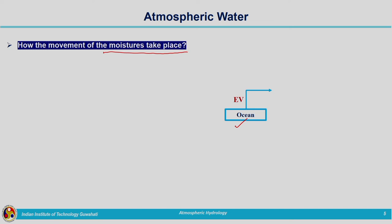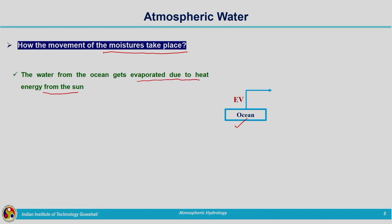Due to evaporation, water vapour is formed and moves upward into the atmosphere, getting evaporated due to heat energy from the sun. When it absorbs heat energy, warmer air near the water body — which contains water vapour — rises into the atmosphere, continuing to rise until it cools and condenses. Then clouds are formed from these tiny water droplets.